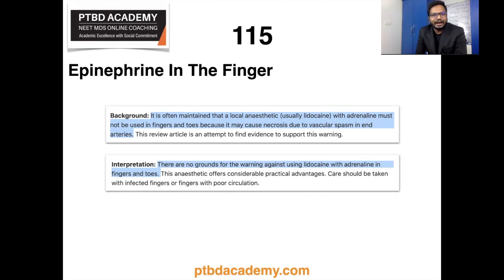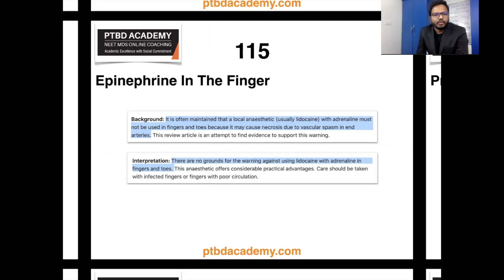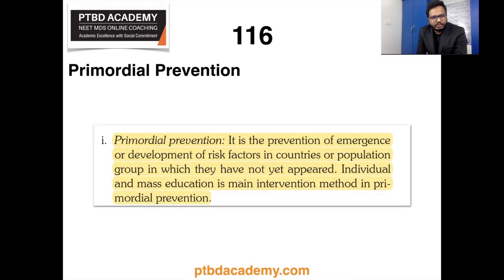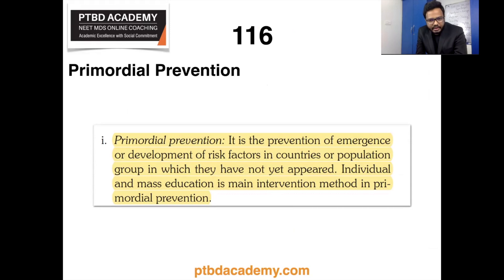Moving on to primordial prevention. This is the prevention of the emergence or development of risk factors in countries or population groups in which they have not yet appeared. Individual and mass education is the main intervention method in primordial prevention, which is the earliest level in the hierarchy of prevention levels.